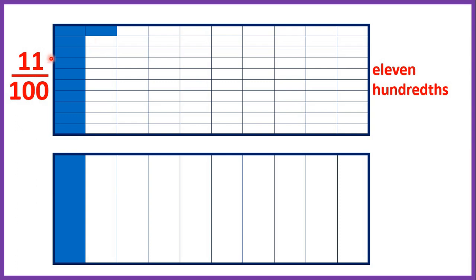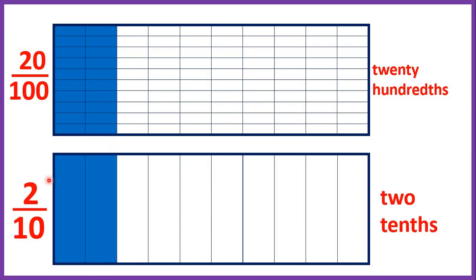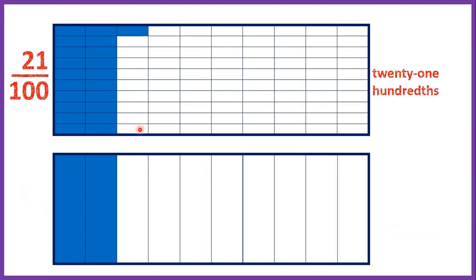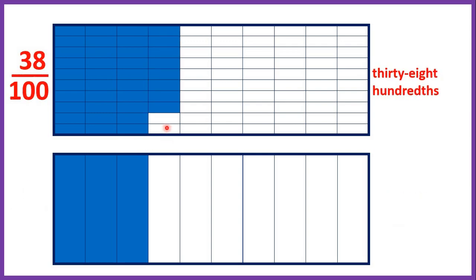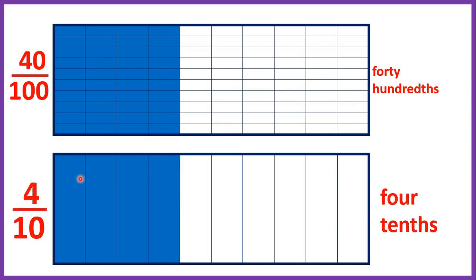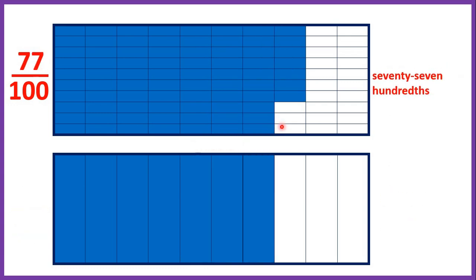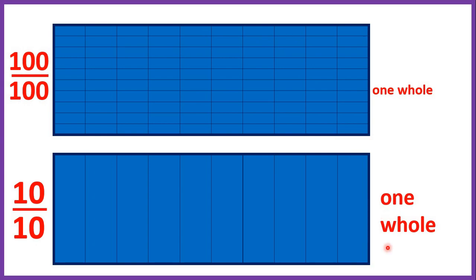If we count on, eleven hundredths is just a little bit more than one tenth. When we get to twenty hundredths that's the same as having two tenths, and thirty hundredths is three tenths. Thirty-nine hundredths is just a little bit less than four tenths, so forty hundredths is equivalent to four tenths. If you've got one hundred hundredths you've got one whole, and if you've got ten tenths again you've got one whole.